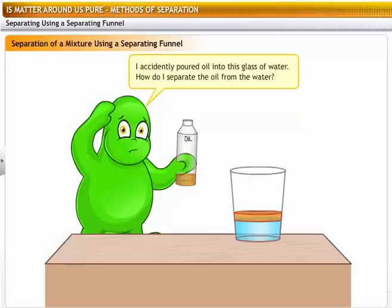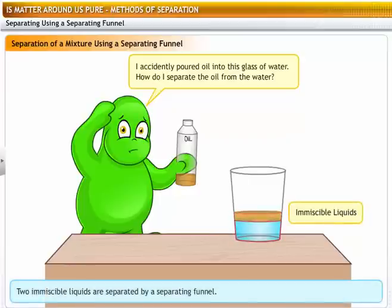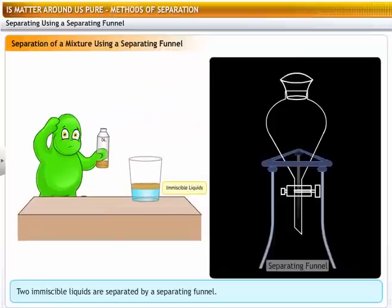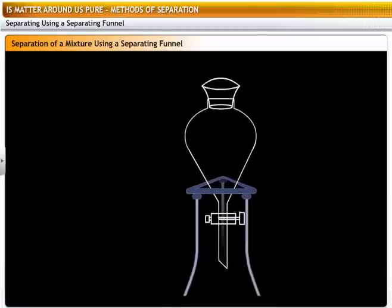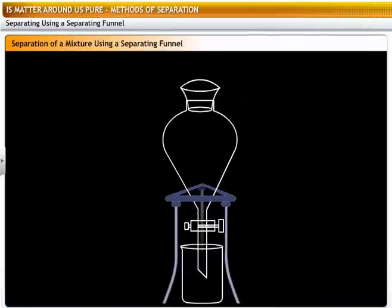When two liquids do not mix, they form two separate layers and are known as immiscible liquids. These two liquids can be separated by using a separating funnel. A separating funnel is a special type of glass funnel which has a stopcock in its stem to regulate the flow of liquid.